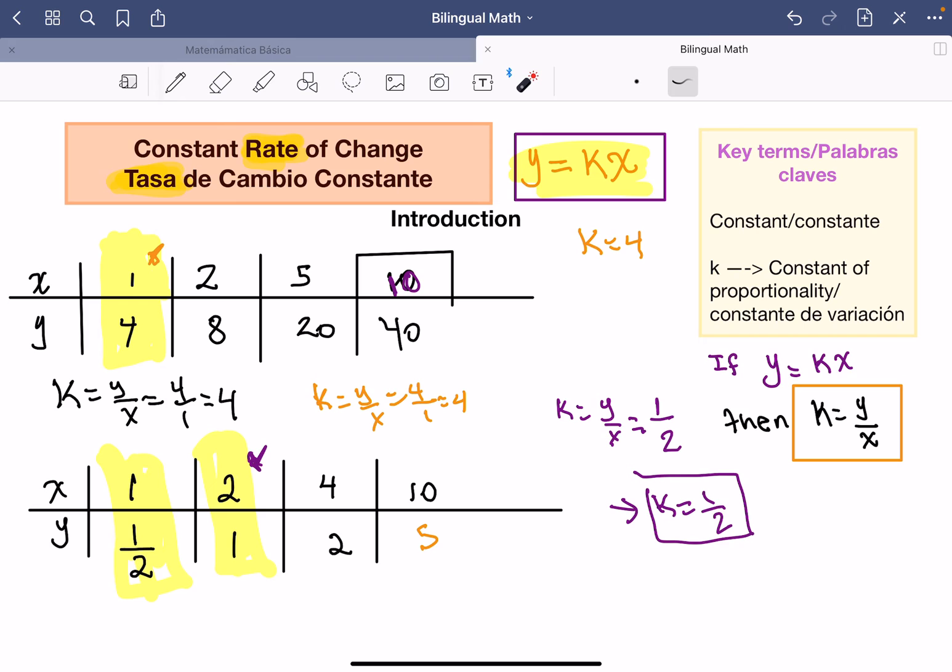Ahora, si ustedes quieren verificar, también pueden tomar otros valores y dicen, 2 sobre 4, que es igual a 1 medio, perfecto. Ahora, lo que vamos a encontrar este número que no teníamos inicialmente, si decimos que y, y es igual a kx.